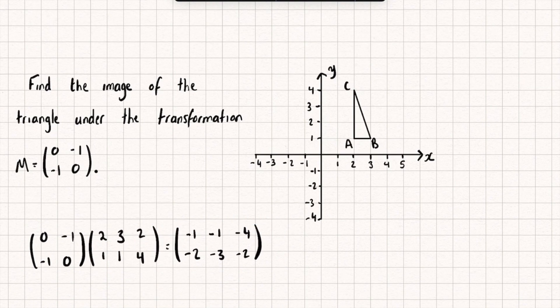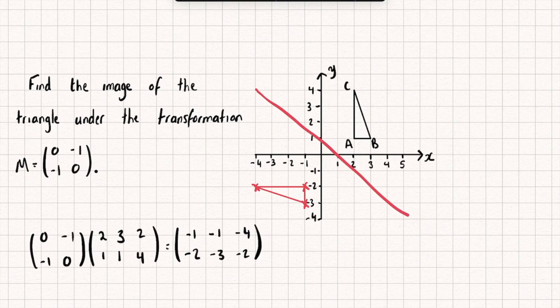Let's now sketch onto our graph each of these new coordinates. We've got (-1, -2), (-1, -3), and (-4, -2). You can see we've transformed this triangle to a new one over here. This matrix here actually represents a reflection in the line y equals negative x. Hopefully you can see that there.